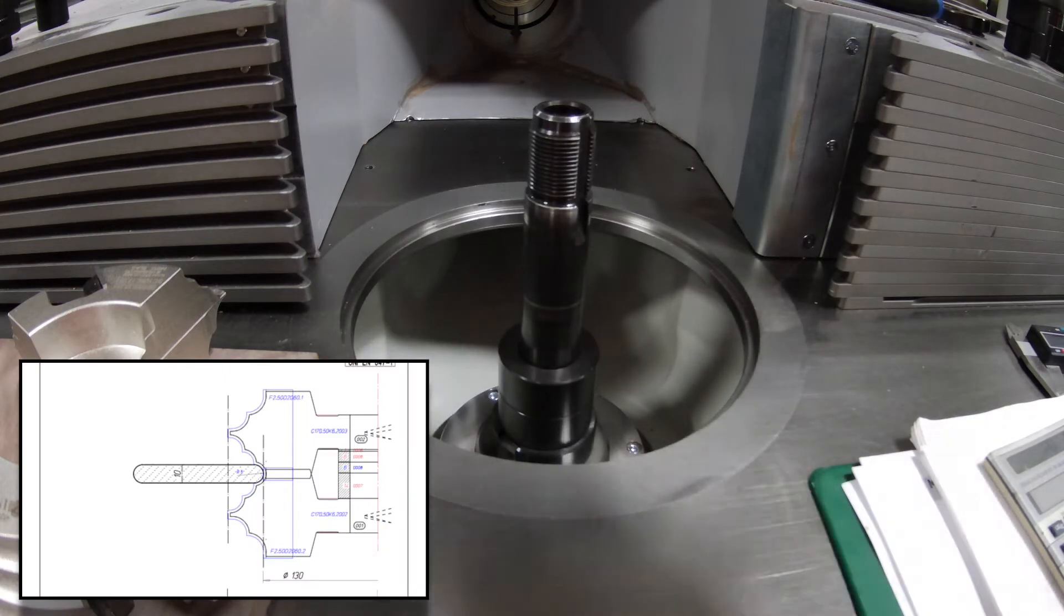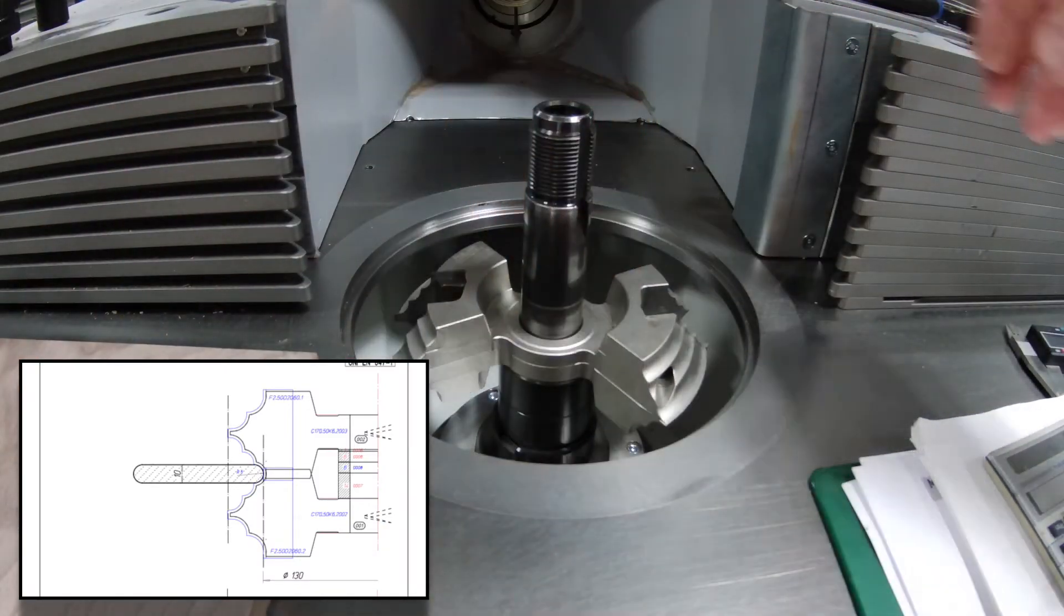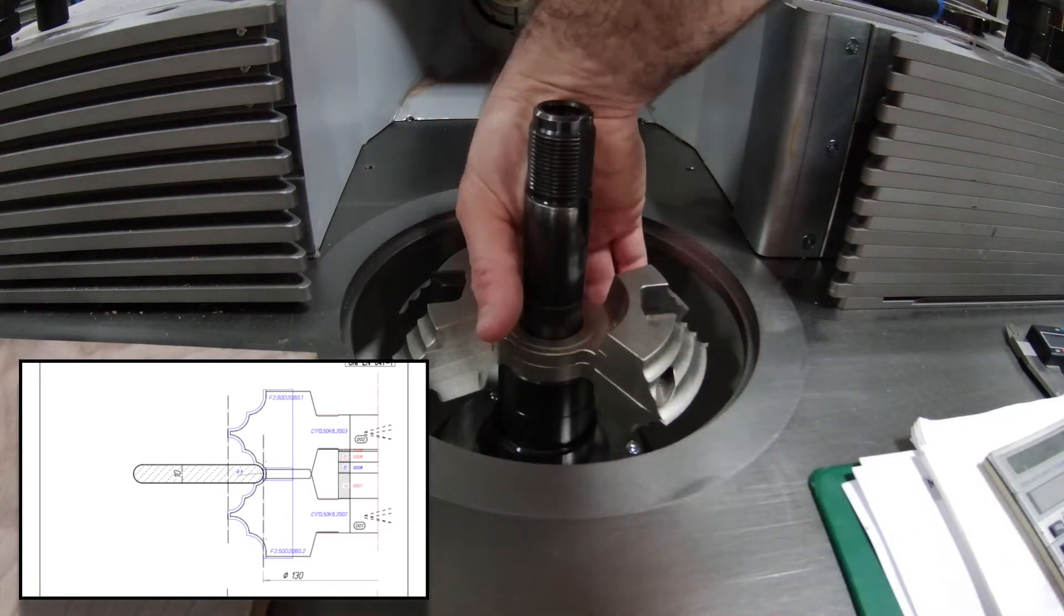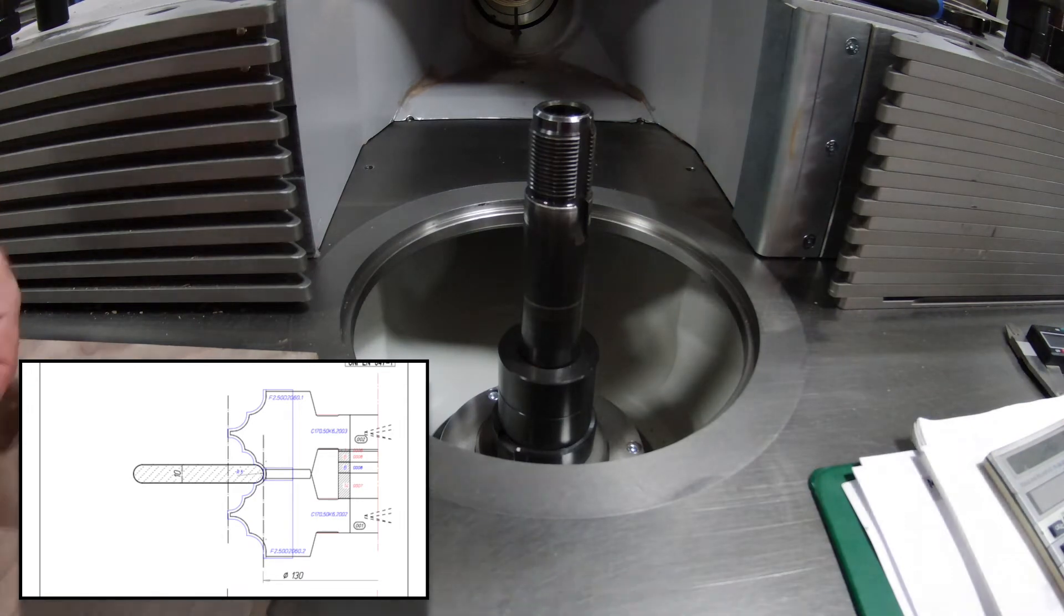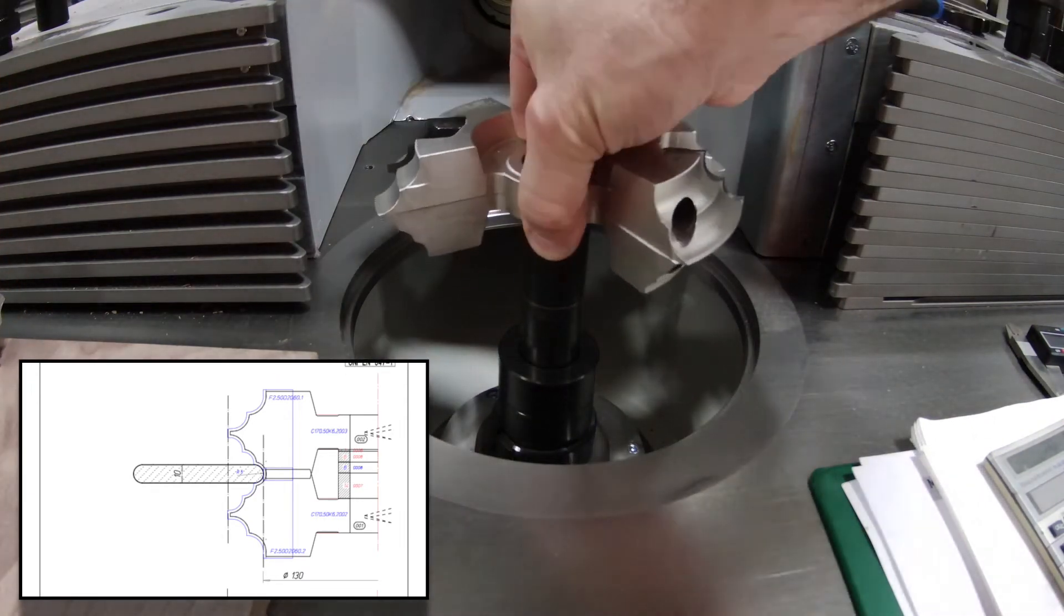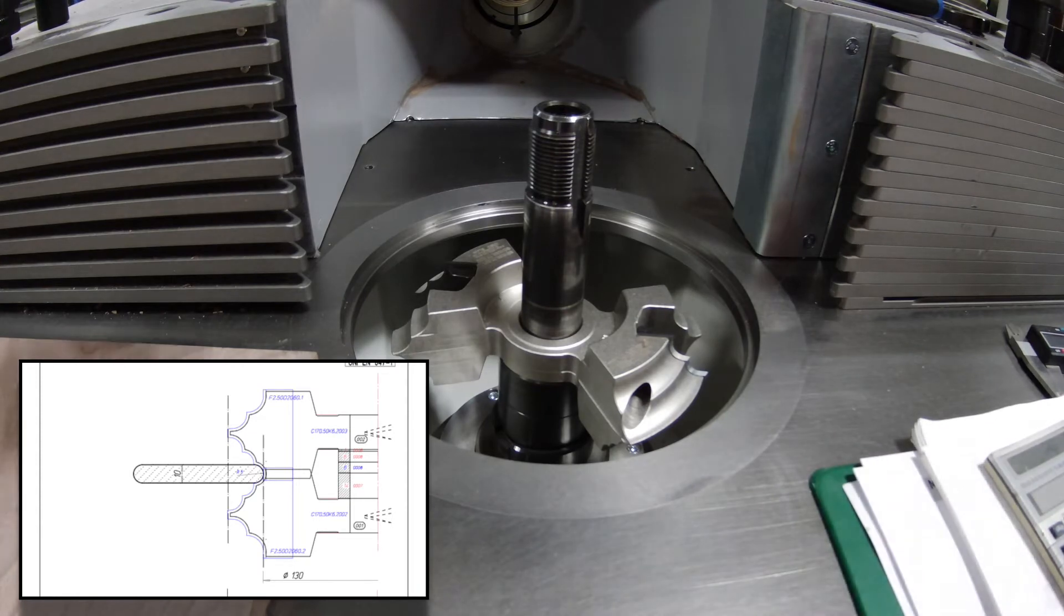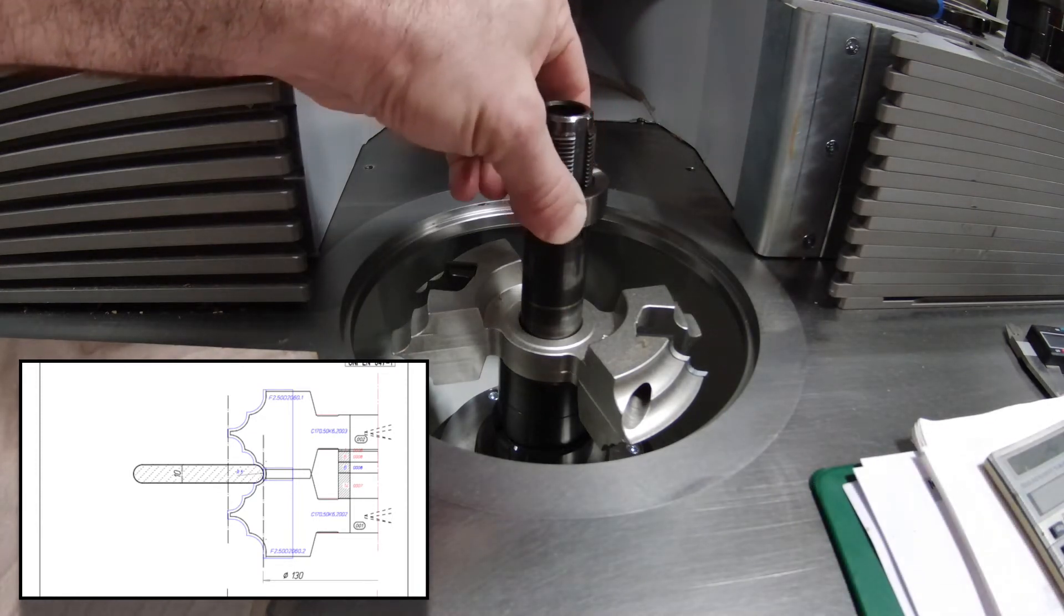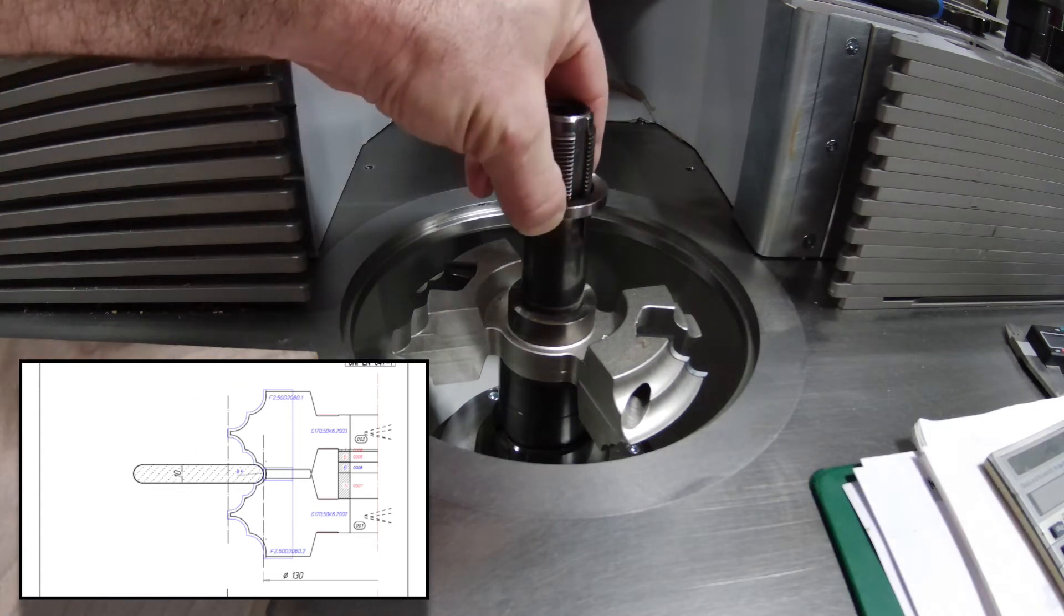So based on the instructions, I have to configure these cutters a certain way. I put the wrong one in first, so I swap them out, put the other one in, and then add the spacers per the specifications. For the 10 millimeter bullnose, I need 27 millimeters of spacers which are provided with the cutter in between the two on the stack. You can see it in the picture.